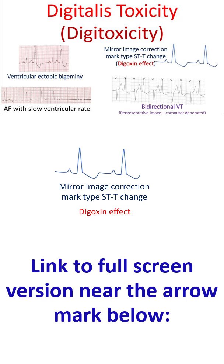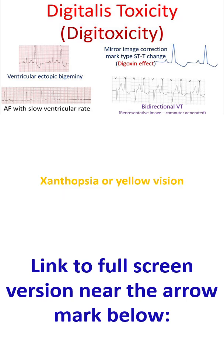Arrhythmias due to digoxin toxicity can be life-threatening and difficult to manage. Direct current cardioversion in the presence of digitalis toxicity can lead to more complex arrhythmias and ventricular fibrillation. Xanthopsia, or yellow vision, was an important feature of digitalis toxicity.